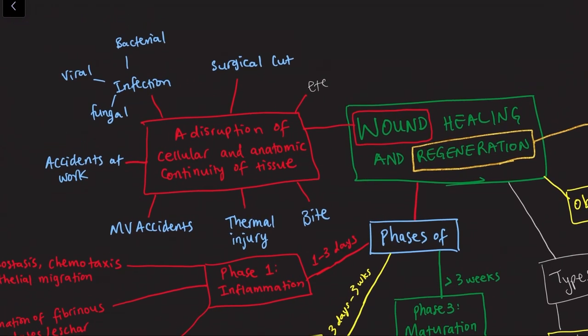Let's look at the definition of a wound. A wound is a disruption of cellular and anatomic continuity of tissue — whether on the skin, the epithelial layers of the GI tract, or other organs of the body. When there is a disruption of cells and the anatomic continuity, you have the formation of a wound.